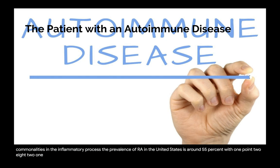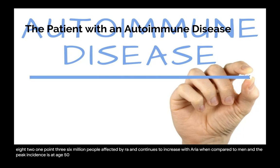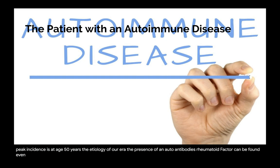More than twice as many women are affected with RA compared to men, and the peak incidence is at age 50. The presence of autoantibodies — rheumatoid factor — can be found even in early RA. Genetic factors determine 50 to 60 percent of the risk for RA, and a family history of RA triples the risk.